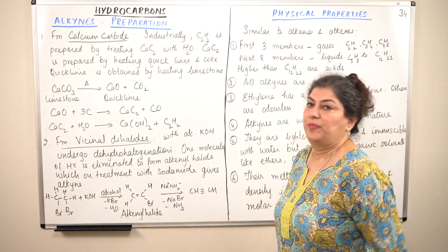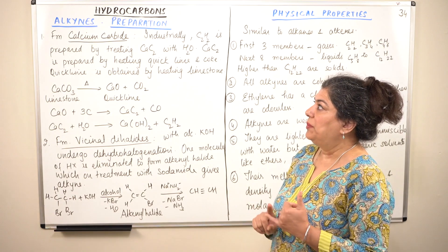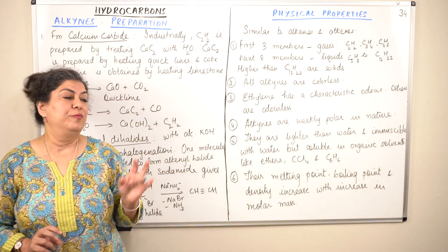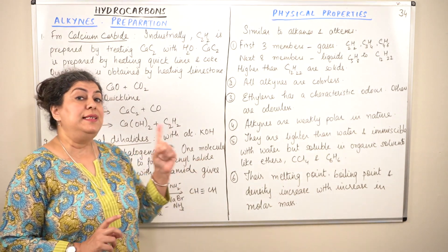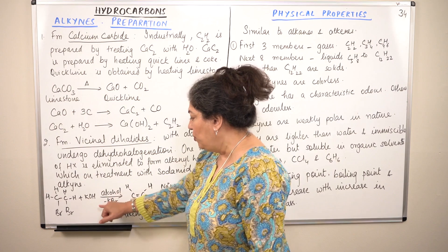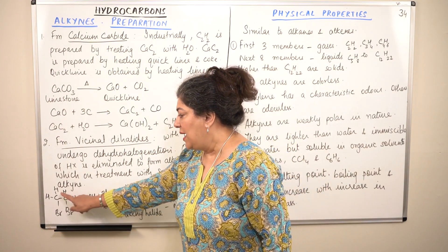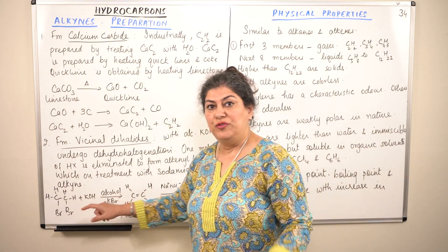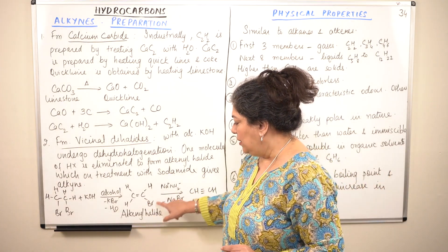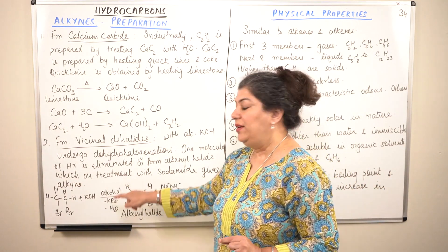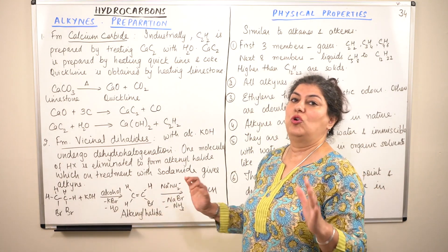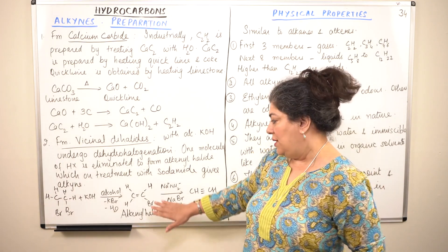So these were the two methods of preparation of alkynes — you can prepare alkynes from calcium carbide, or you can prepare them from vicinal dihalides by dehydrohalogenation. In both steps, hydrogen and halogen are removed, so the process is called dehydrohalogenation. In each step, the halogen is removed from one carbon and the hydrogen atom from the adjacent carbon.